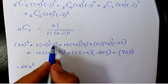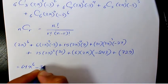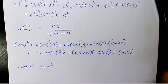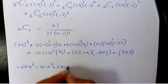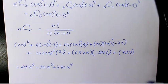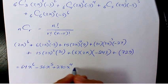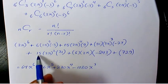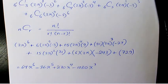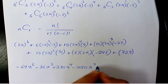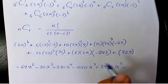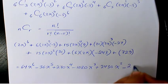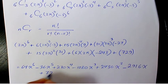So 2^6 is 64, giving 64x^6. Here negative 3 times 2 times 6 gives negative 36, times x^5. Then 15 times 4 times 9 gives 270x^4. Negative 27 times 8 times 20 gives negative 1080x^3. Then 15 times 4 times 81 gives 2430x^2. Then 6 times 2 times 243 gives negative 2916x. Plus 729.